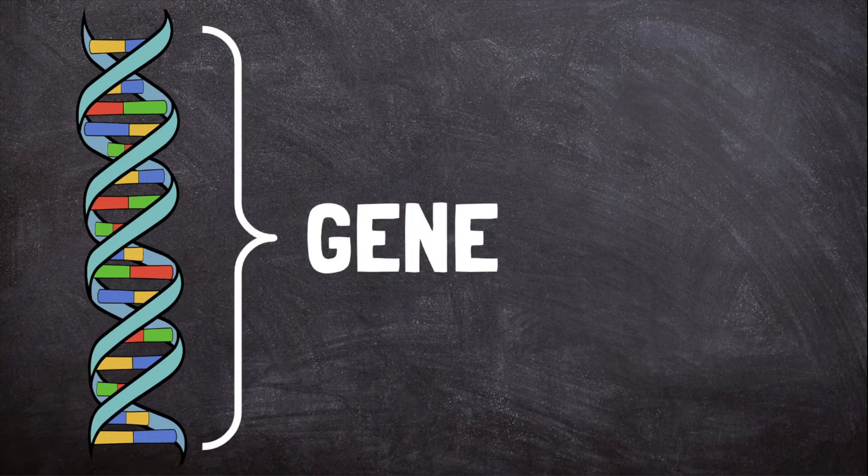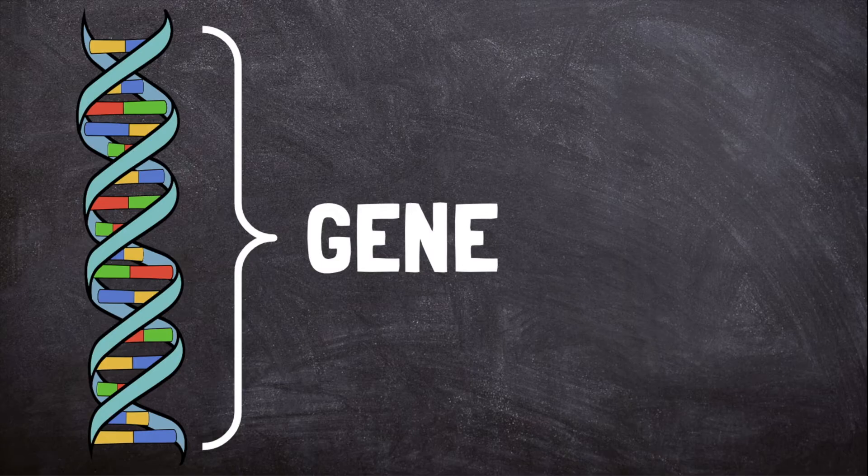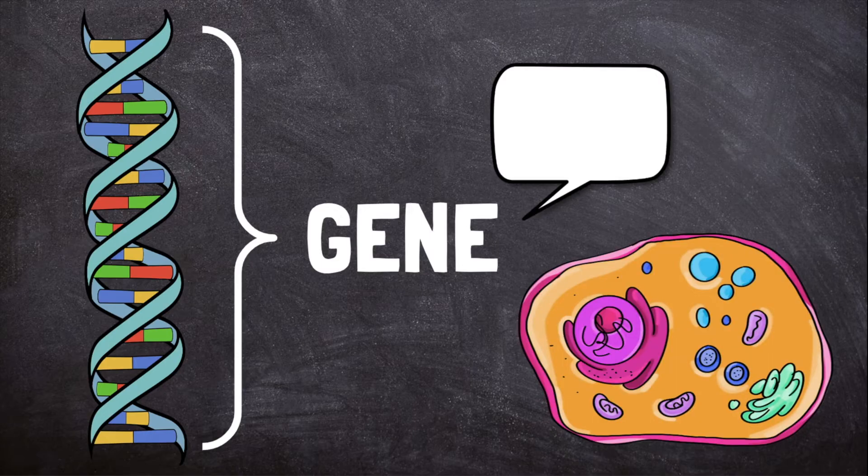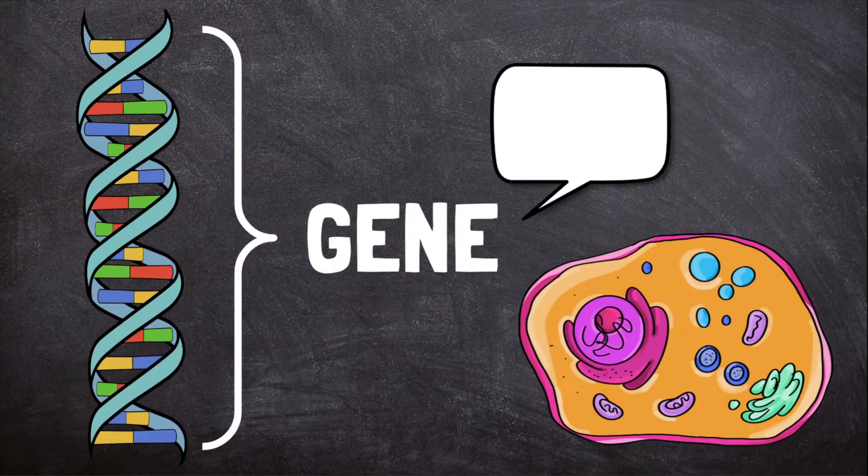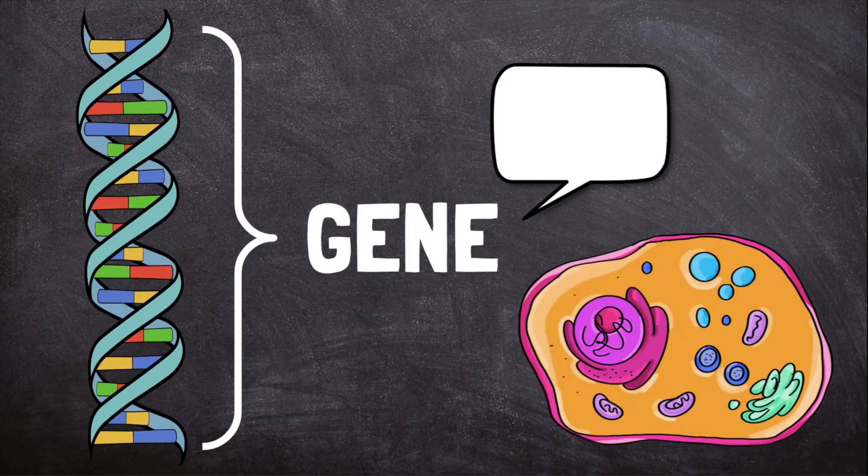A long strand of these coded instructions is called a gene. Genes tell cells how to make proteins. These proteins allow the cells to function, grow, and survive.